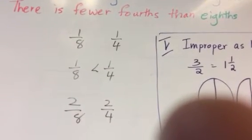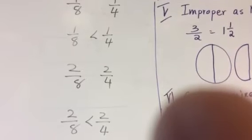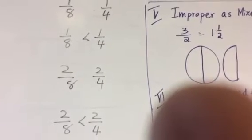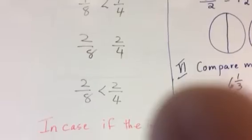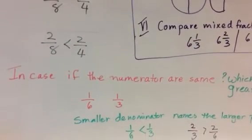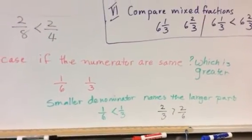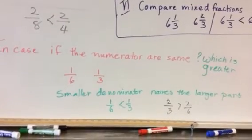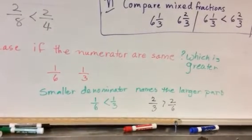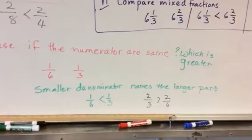Now, two eighths is bigger or two fourths is bigger? Two fourths is bigger because two fourths is completely half of the number line of fourths. But two eighths is not even half of eight. In case if the numerators are same, if you have one sixth or one third, the smaller denominator names the larger part. So, if you have one sixth or one third, you will say one third, the denominator with the smaller denominator is bigger when you have same numerators. So, if you have two thirds or two sixths, it will be two thirds because it has a smaller denominator.